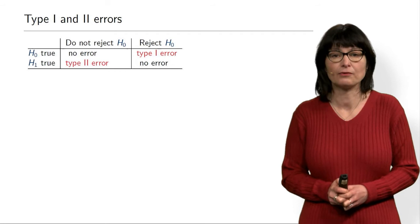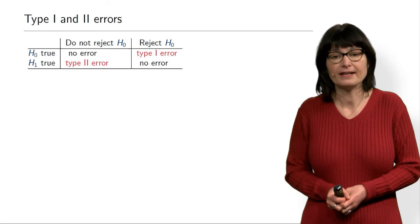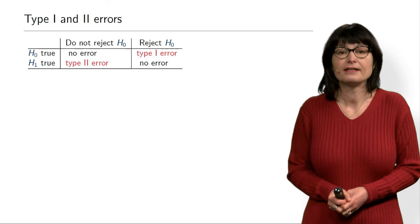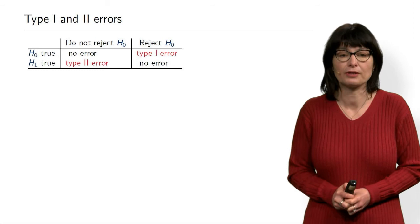Now let's look at the second line: H1 is true, meaning H0 is not correct. If we reject H0, then we make no error. But if we do not reject H0 while H1 was true, then we are making a type 2 error. Preferably the probability of type 2 error should also be low, but type 1 error is more important.